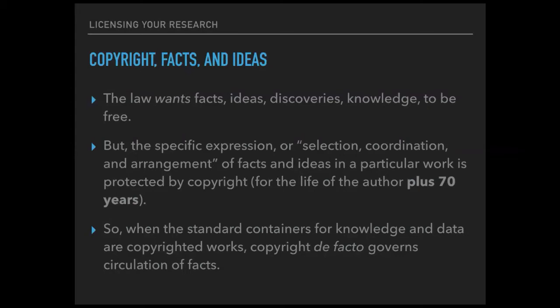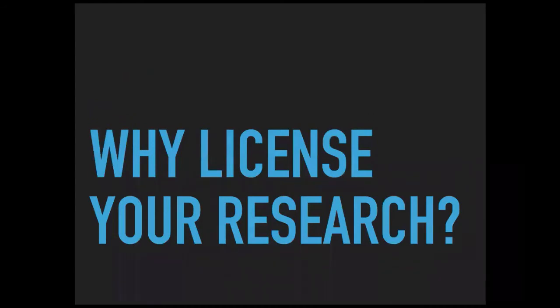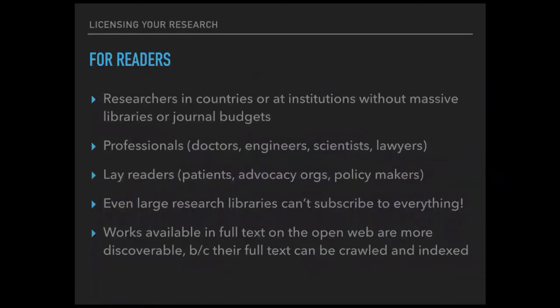There's this tension — and one reason to license your research is to help alleviate that tension. Why license your research? For readers: when you license your research with an open license, or any kind of license that tells readers what they can do with your research, it lets researchers in countries or at institutions without massive libraries or journal budgets gain access online. When you use something like the Open Science Framework to publish versions of your work — working papers, post-prints, pre-prints — and you post those things on the web openly with a clear license, it tells your readers all over the world that they're free to take and use this stuff without legal fear.